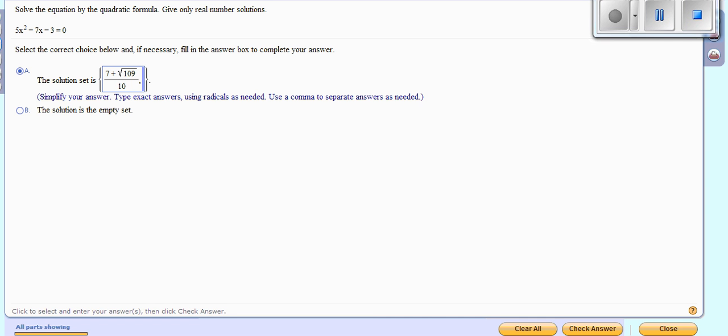So when I plugged this in here, I actually pressed the fraction key first. Then I typed in my 7 minus, I hit my square root symbol, then I typed in 109. Then I went down to the bottom by arrowing down, clicked in the bottom box and typed in my 10.